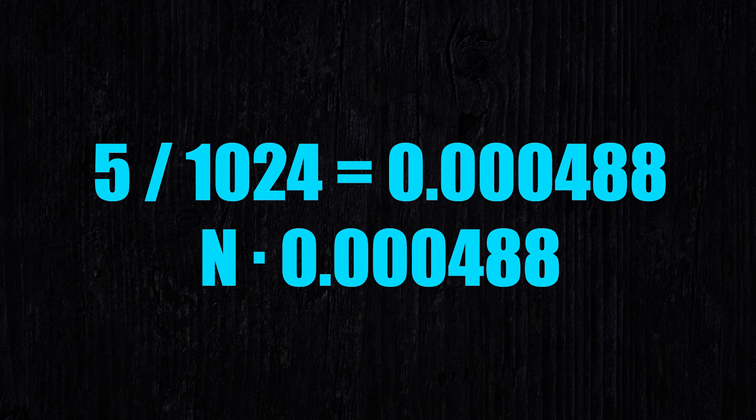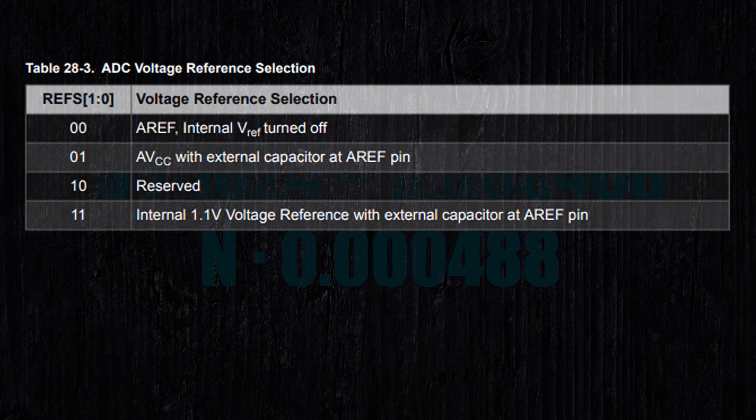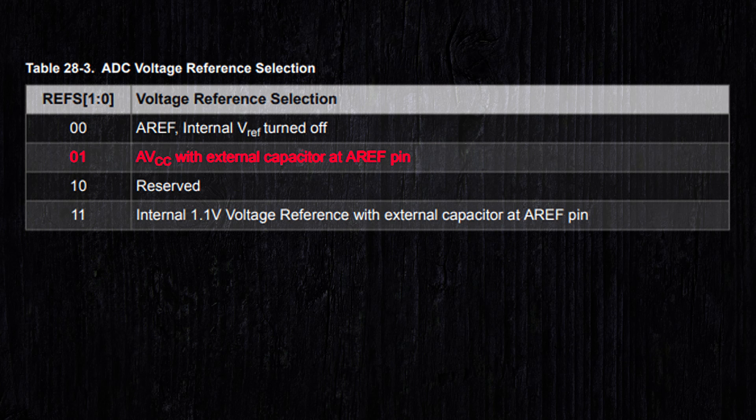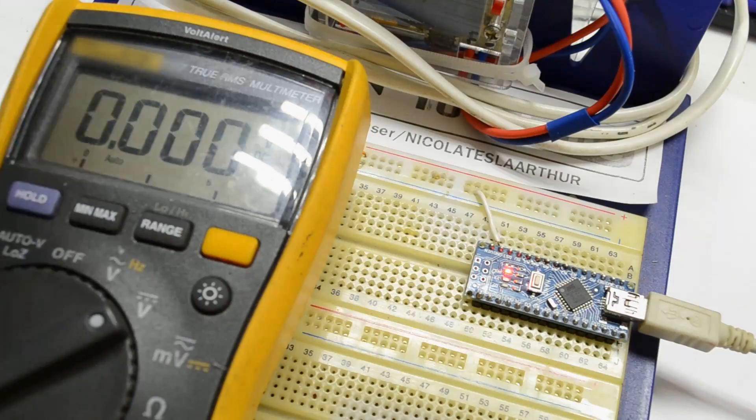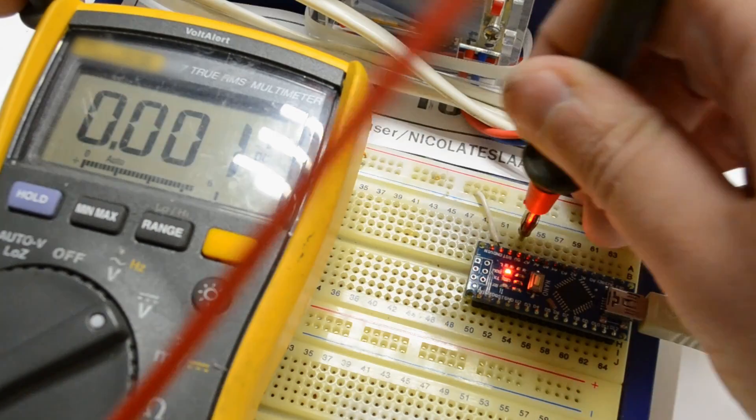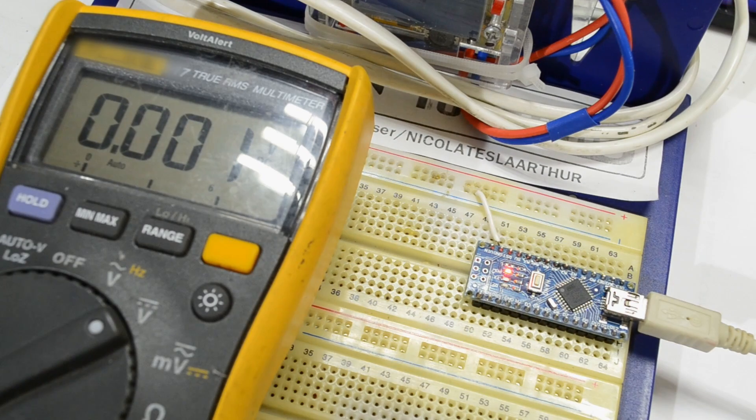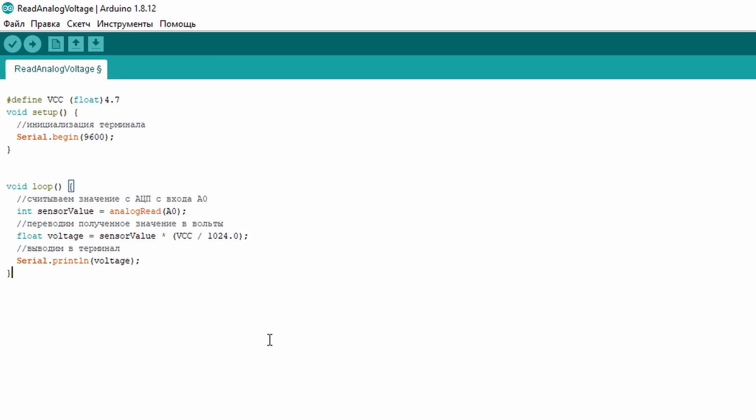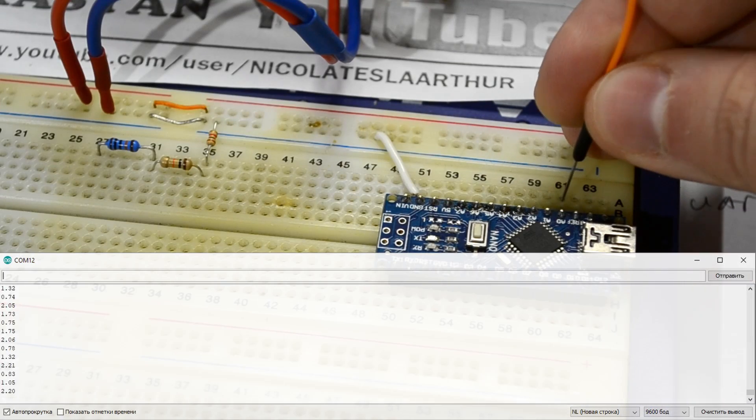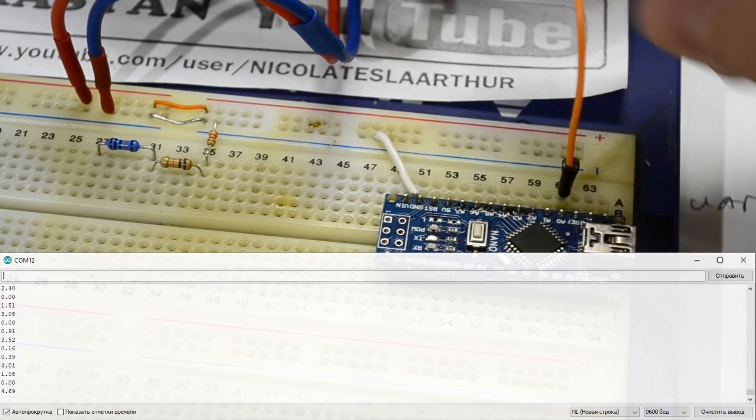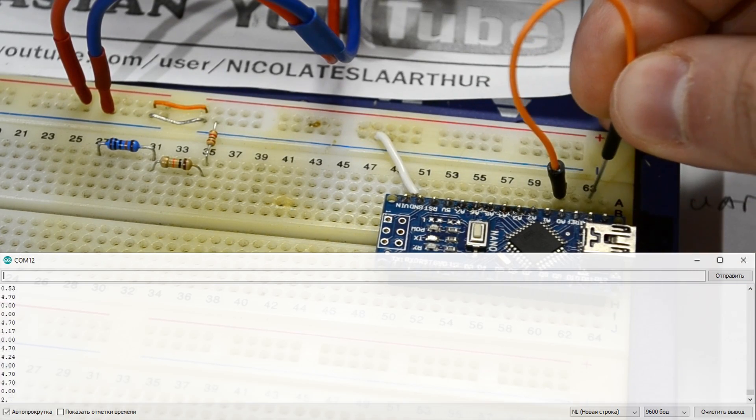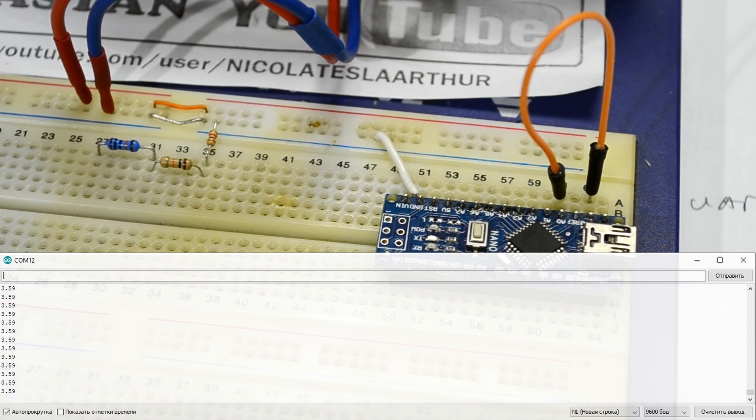we need to calibrate the ADC. By default, the reference voltage is taken from the supply voltage, but it can vary. This has a negative influence on the measurement accuracy. Therefore, we measure the voltage on the 5 volt and 3.3 volt lines with the multimeter. Then, we enter the value of the reference voltage into the program and change the voltage recalculation code. Now, we can run the program and connect pin A0 to the 3.3 volt line to make sure the ADC readings are correct.